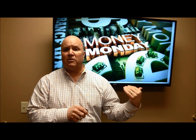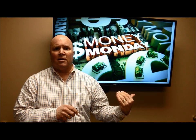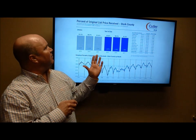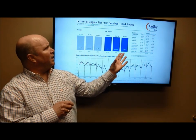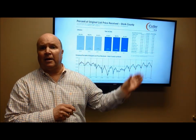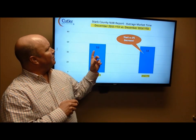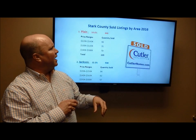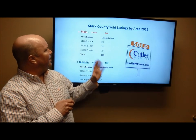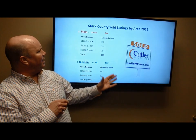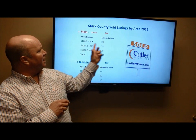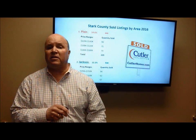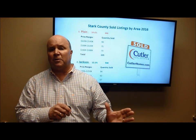How are you going to come up with the statistics to show what's going on in the marketplace? There are many ways — I'll show you exactly how to dissect that. We'll be talking about the percent of original price received, the average market time and how to calculate that, and the hottest selling price ranges — like Plain Township at $120,000–$140,000 and Jackson Township at $200,000–$250,000.